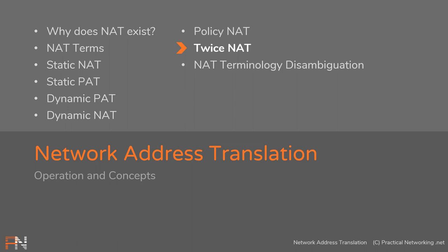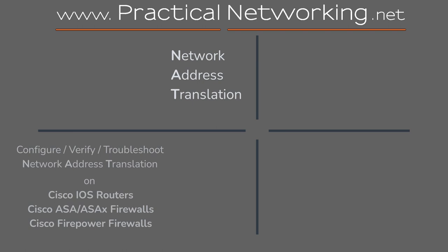So that is the definition of a twice NAT. The key takeaway is that a twice NAT is simply doing one of these types of translation on both the source and, again, on the destination. Hope you enjoyed this lesson. Thank you for watching, and we'll see you in the next one.